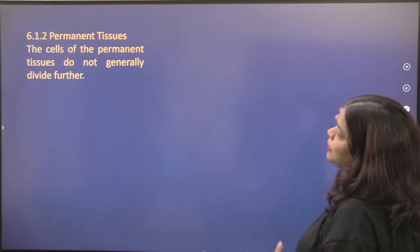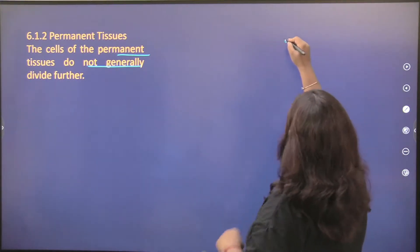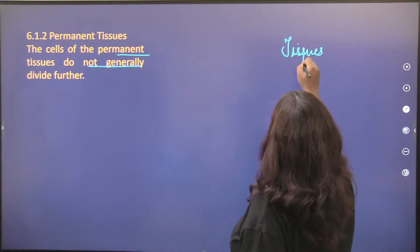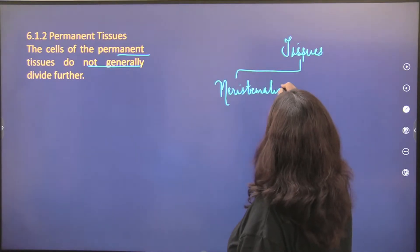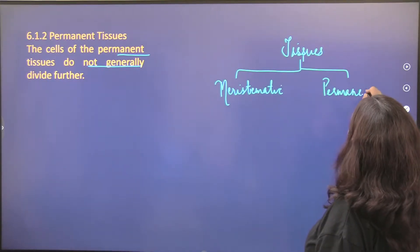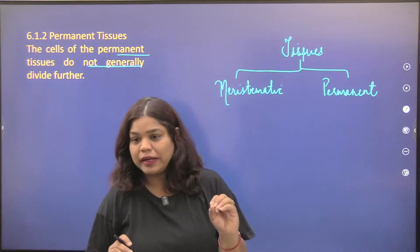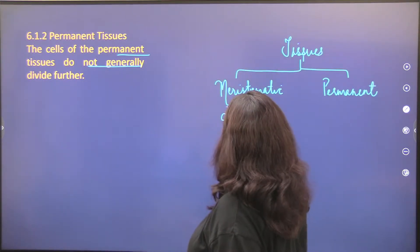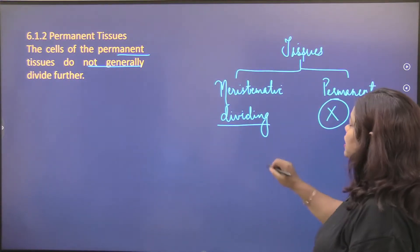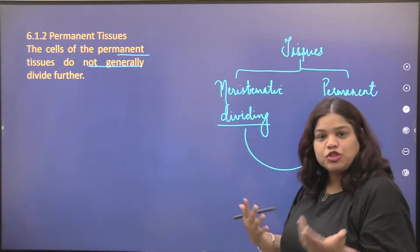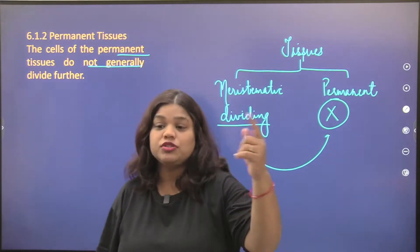Let's start with permanent tissue. The cells of permanent tissues do not generally divide further. We have seen tissues in two parts: meristematic and permanent. Meristematic tissue keeps on dividing, while permanent tissue has no division. When meristematic tissue matures, it becomes permanent tissue. Some tissues can sometimes divide, which is why we say they do not 'generally' divide further.